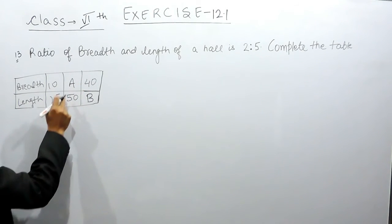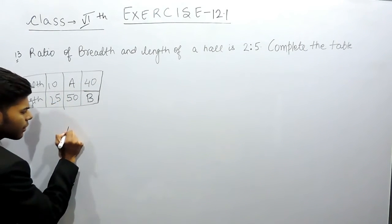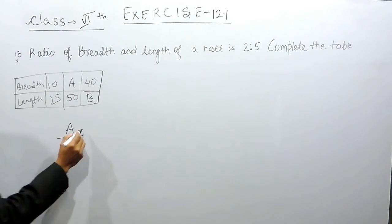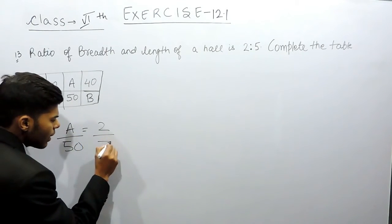Now, we are given the ratio of breadth to length. That means A upon 50, breadth to length, and that is given to us as 2 by 5.